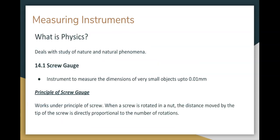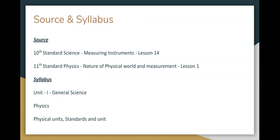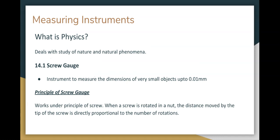So in the chapter, that is 10th standard science Measuring Instruments and 11th standard physics. Physics is the study of nature, natural phenomena. But the reason behind it is logic, scientific study. So screw gauge in the measuring instrument. In school and college laboratories, screw gauge is used for experiments. That is, to measure the dimensions of wires.